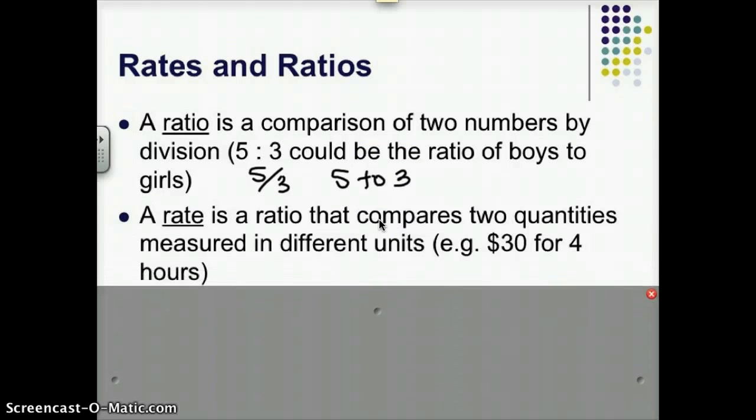A rate is a special type of ratio. It compares two quantities measured in different units. So for example, you might get paid $30 for four hours. That's a rate, $30 for four hours.